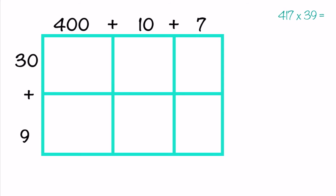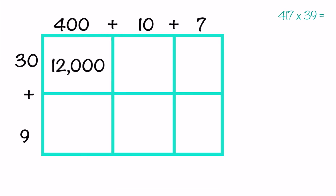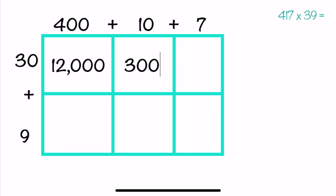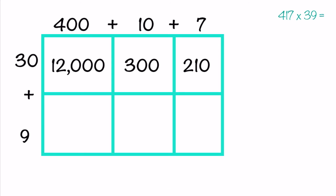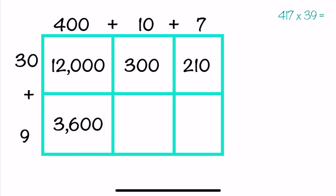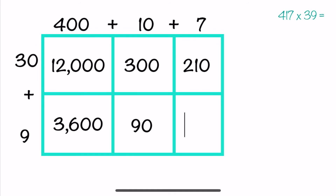400 times 30 is 12,000. 10 times 30 is 300. 7 times 30 is 210. 400 times 9 is 3,600. 10 times 9 is 90. And 7 times 9 is 63.